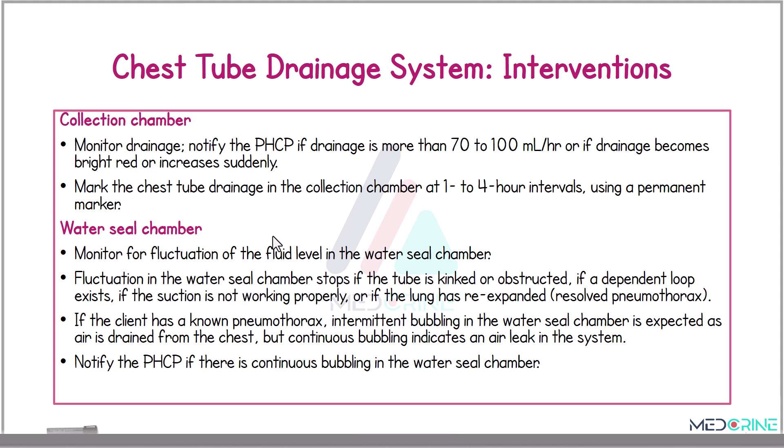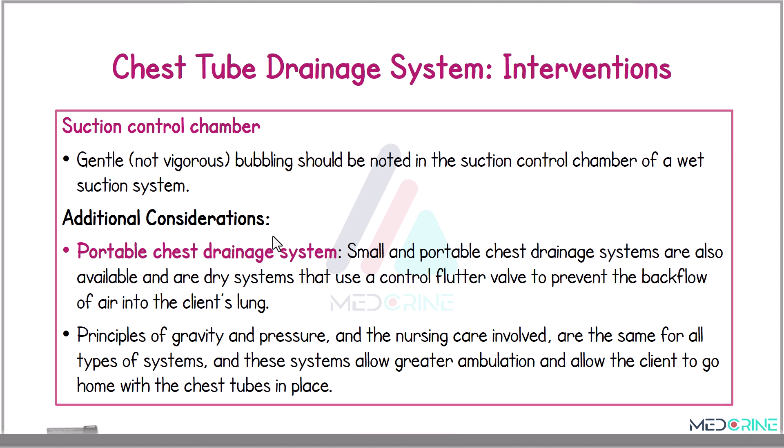We need to notify the primary healthcare provider if there is continuous bubbling in the water seal chamber. On the suction control chamber, gentle bubbling should be noted in a wet suction system. In some cases, a portable chest drainage system is available — these are usually dry systems that use a controlled flutter valve to prevent backflow of air into the client's lungs. All the principles of gravity and pressure and the nursing care involved are the same for all types of drainage systems. These portable systems allow greater ambulation for the patient and allow the client to go home with a chest tube in place.